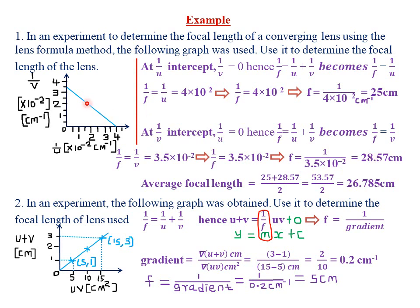Because this particular graph, after extrapolating it, can cut both axes, you find the average focal length using both the 1/u intercept and the 1/v intercept. The second question reads: in an experiment, the following graph was obtained to determine the focal length of the lens used. This is a graph of (u + v) — the object distance plus image distance — against the product uv.